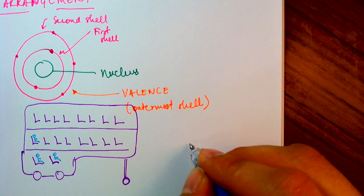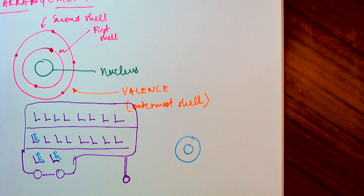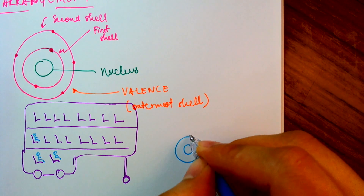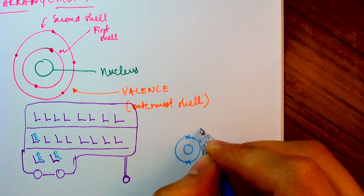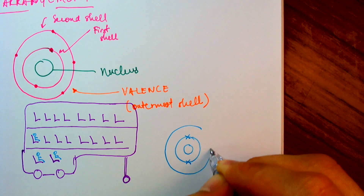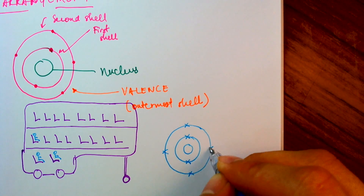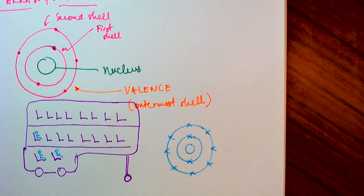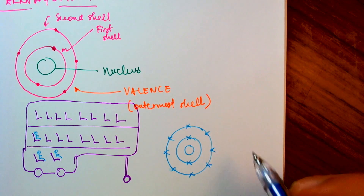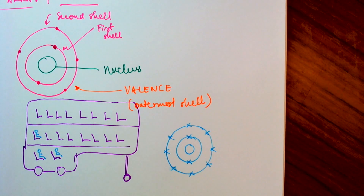So the first shell can only accommodate two electrons — I'll represent electrons by crosses, so my first shell has two crosses. The second shell can accommodate at most eight electrons. I would fill them up like that, for example. This would be an example of an atom with 10 electrons: two in the first shell and eight in the second shell, giving a total of 10.